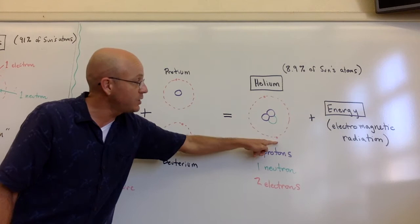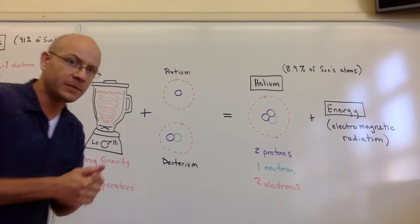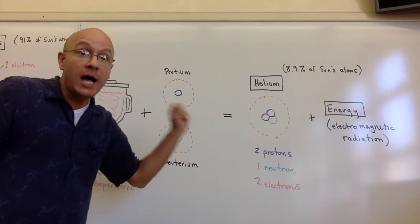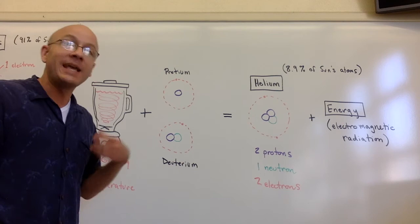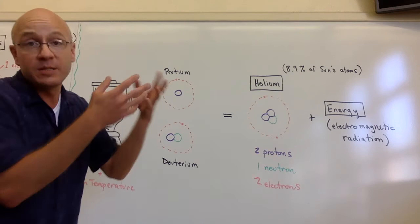When this combination happens, when this fusion happens, you end up with the helium atom plus energy, lots of energy, in the form of electromagnetic radiation. And that electromagnetic radiation includes gamma rays, includes visible light, includes all sorts of other types of energy, ultraviolet, that then makes its way here to Earth.